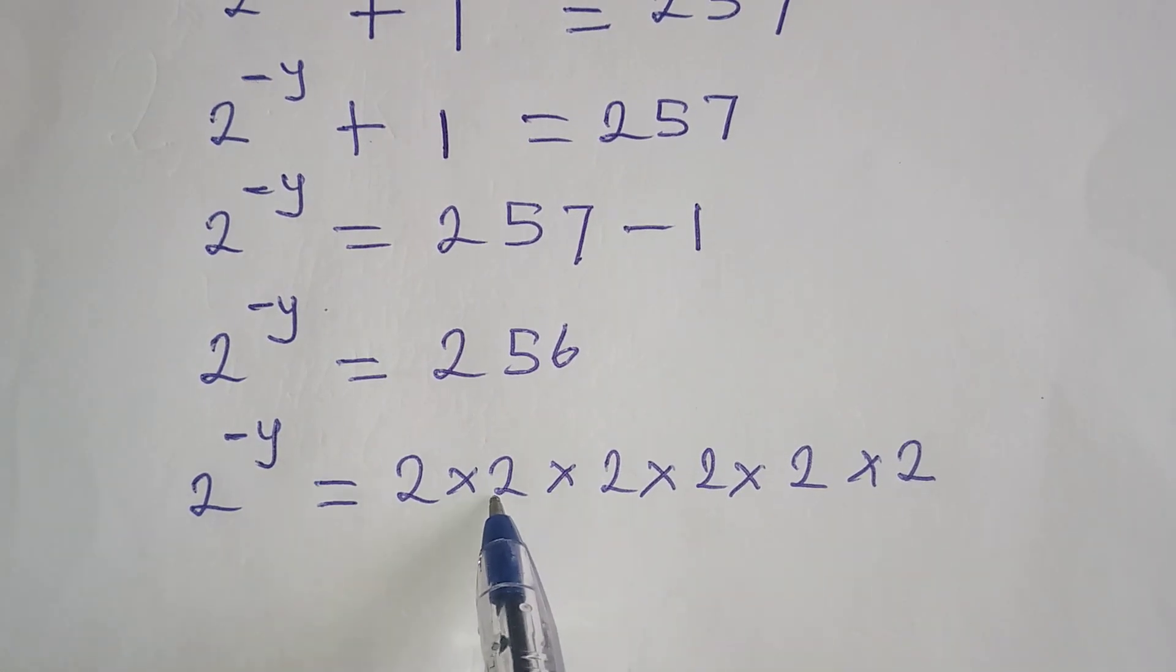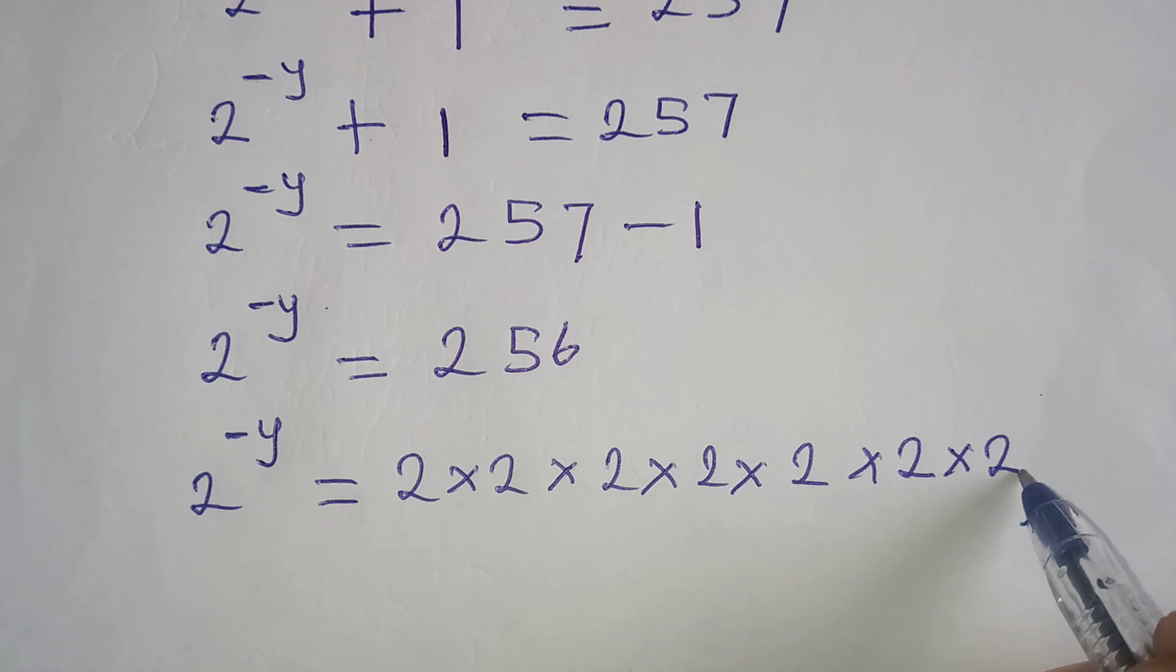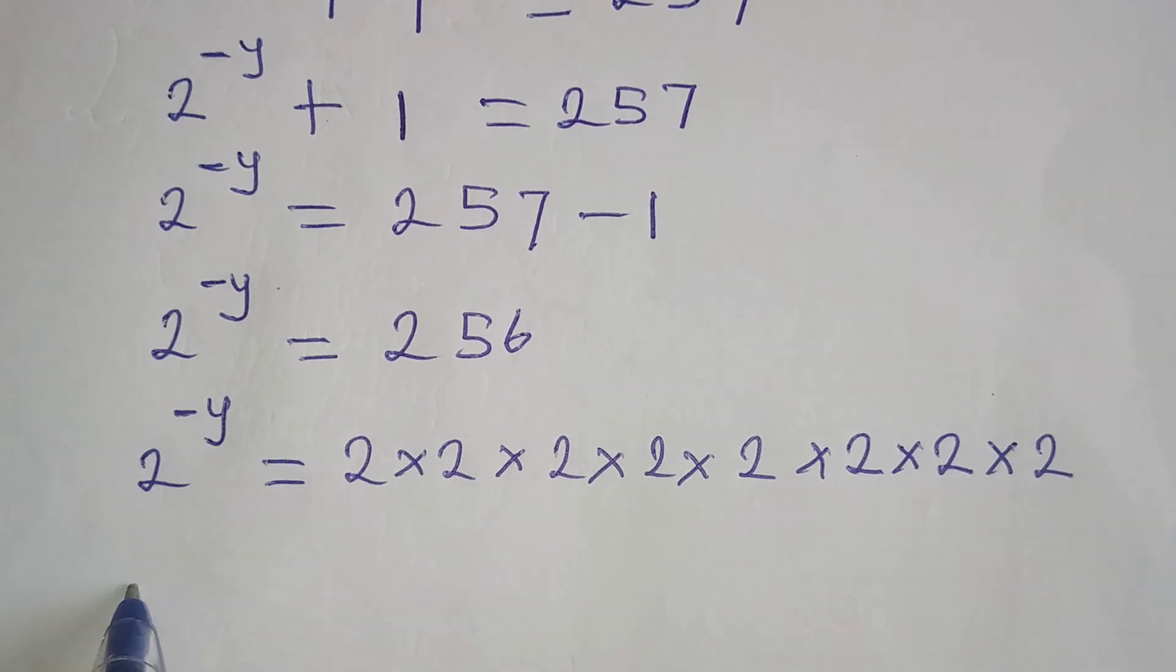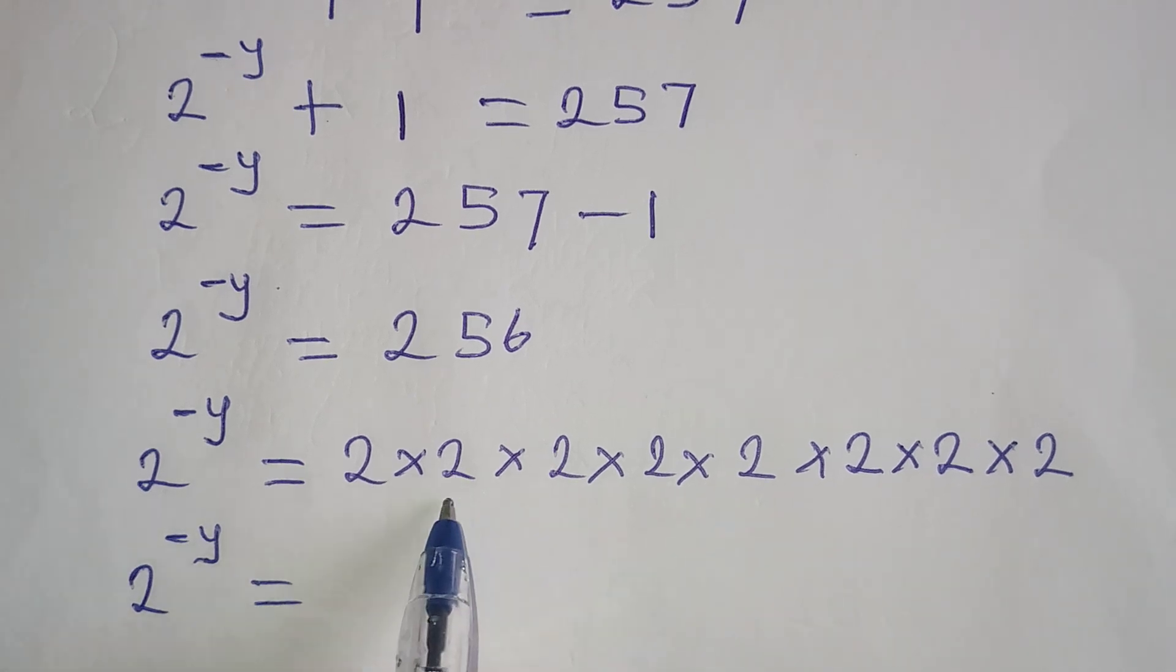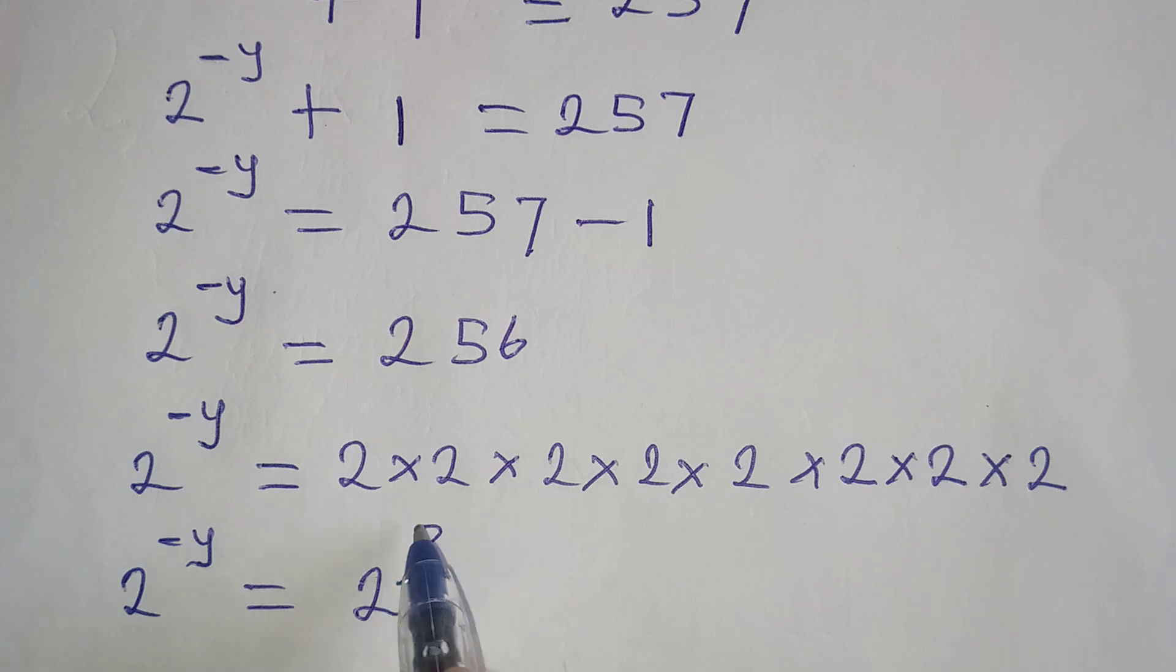2 times 2 is 4, times 2 is 8, times 2 is 16, times 2 is 32, times 2 is 64, then times 2 again we have 128, times another 2 and we have 256. Now, 2 to the power of negative y will be 1, 2, 3, 4, 5, 6, 7, 8, meaning we have 2 in 8 places.